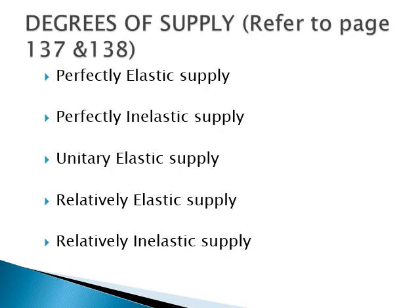You can refer to page number 137 and 138 in your books. The five degrees are: perfectly elastic supply, perfectly inelastic supply, unitary elastic supply, relatively elastic supply, and relatively inelastic supply. Let's get into the details of all five degrees of elasticity of supply.